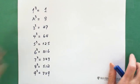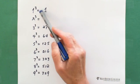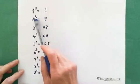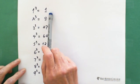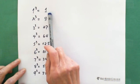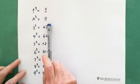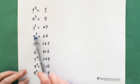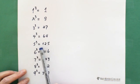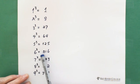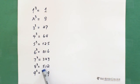Let's first find the pattern. Here are the cubes: 1 cubed equals 1, 2 cubed equals 8, 3 cubed equals 27, 4 cubed equals 64, 5 cubed equals 125, 6 cubed equals 216, 7 cubed equals 343, 8 cubed equals 512, 9 cubed equals 729.